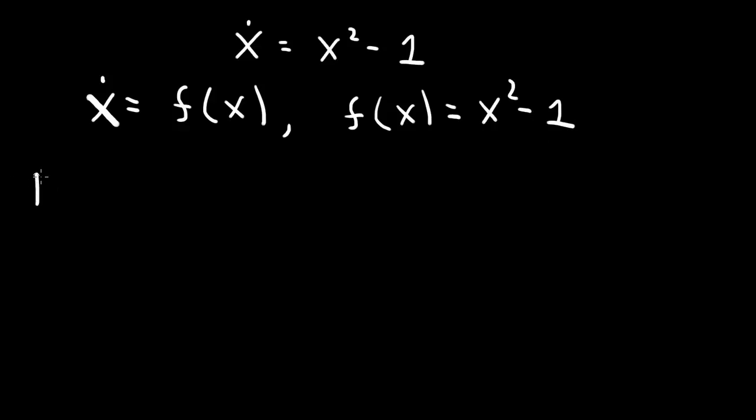So to find the fixed points, we set x-dot to 0. So we set f of x equals 0. So x squared minus 1 equals 0.